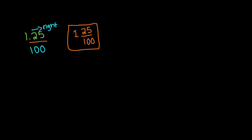Now, it's always a good idea to simplify. When you're simplifying, the whole number stays the same, so it's going to be 1. For 25 over 100, we know that both 25 and 100 are divisible by 5. So if we divide them by 5, we get 25 divided by 5 which is 5, and 100 divided by 5 which is 20.